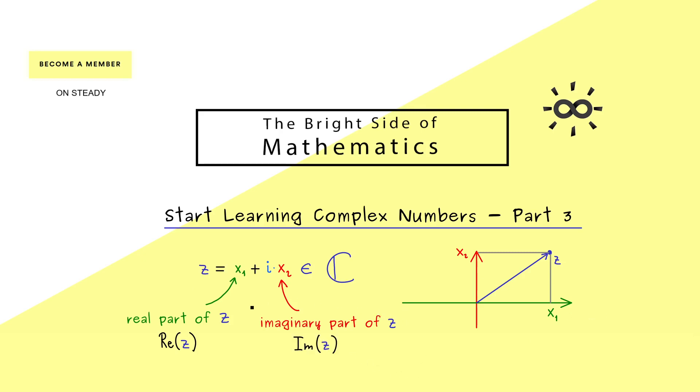And on the other hand the imaginary part lies in the direction of i and is usually denoted by Im(z). Okay now in the picture you should also see that we have visualized the complex number with an arrow. And of course such an arrow has a well defined length. And this distance we usually call the absolute value of the complex number z. However you also sometimes see the term modulus of the complex number z.